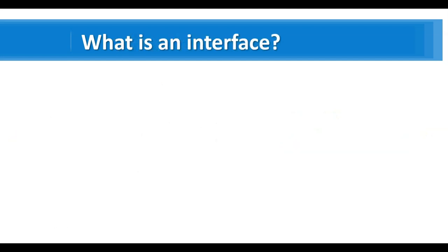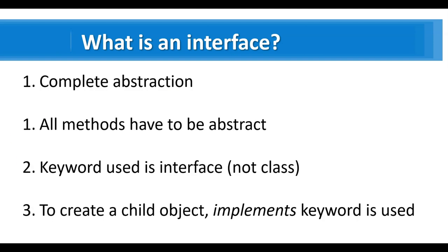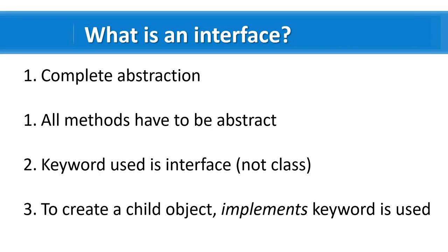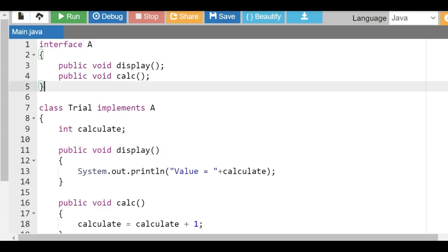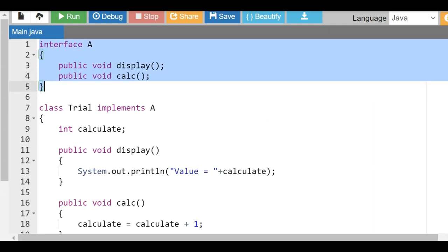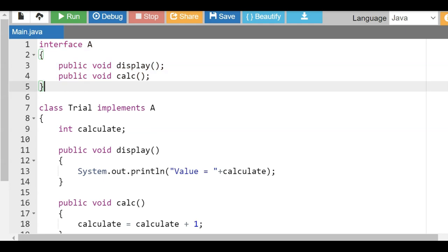So this is what an interface is. Java has done this using the 'interface' keyword. An interface provides complete abstraction — the first step is having an agreed-upon template which has to be implemented. Now let's see how to use an interface in a hands-on way. Let's look at a simple program to explain what an interface is.